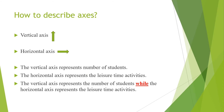Let's see how to describe the axes. The vertical axis represents the number of students. The horizontal axis represents the leisure time activities. Now you can see we have connected two sentences: 'The vertical axis represents the number of students while the horizontal axis represents the leisure time activities.'